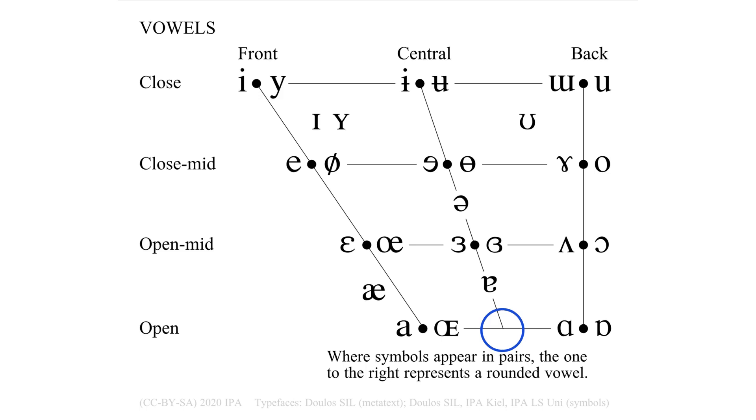The second problem is that when linguists transcribe this vowel, an unmodified character for a different place of articulation is often used. This introduces ambiguity for both the open central vowel A as well as the other vowels that will be mentioned in this video.